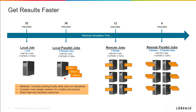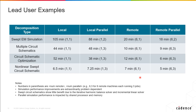To give a better visualization: consider a single simulation job — one schematic, one job — that takes 52 minutes. We can parallelize it locally on a multi-core computer with three parallel jobs and get it down to 36 minutes. Alternatively, running it remotely on six different computers with one job each can get it down to 12 minutes. Combining both — six computers with three parallel jobs each, 18 jobs total — can get it down to six minutes. We've seen much greater improvement in other examples; these were just some lead-user examples.